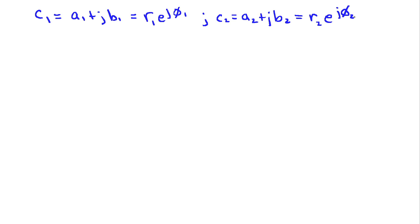So if I want to add c1 and c2, then it turns out that to do that, I simply add the real parts and I add the imaginary parts. And you can see that from our graph in the complex plane, it's just adding two vectors.